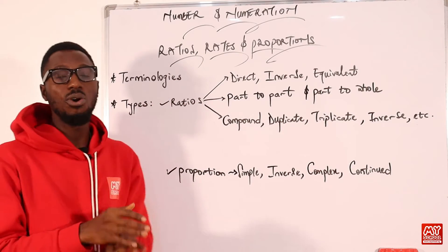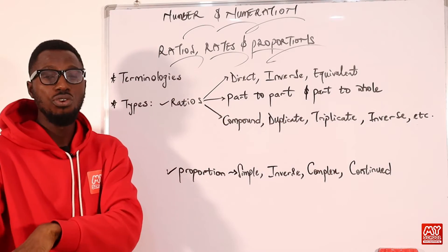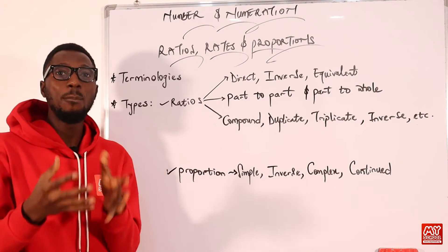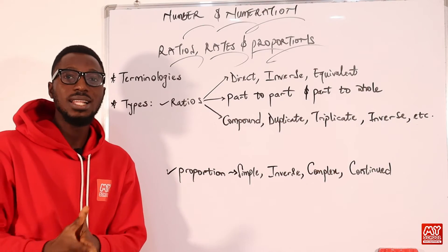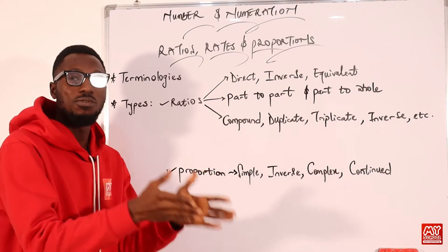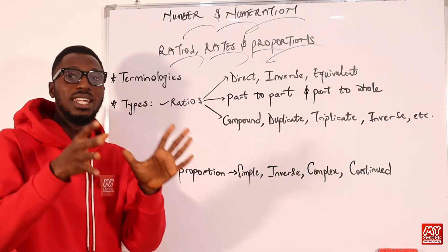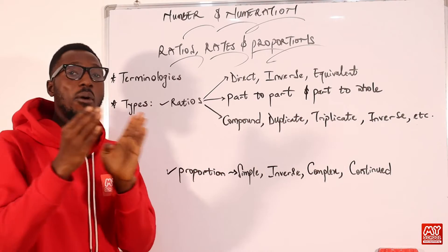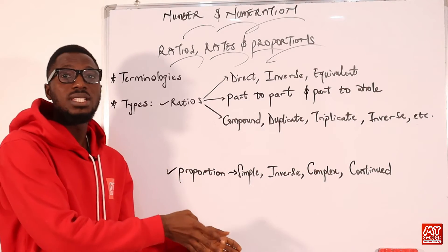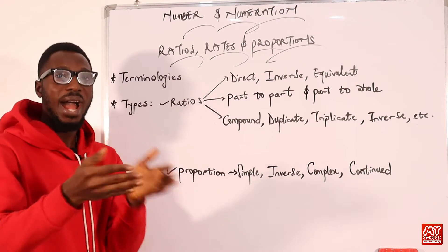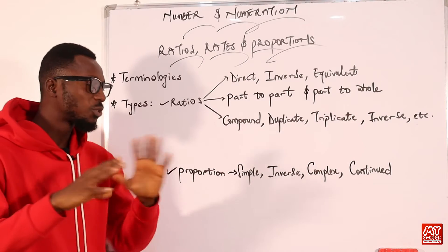Then we will talk about rates or rate ratios. Rates are another kind of ratio whereby they compare quantities of different kinds. For instance, if I compare mass to volume, those are quantities that differ — that gives rise to density. If I'm comparing distance to the time used, that is kilometers per hour, giving rise to speed, and so much more.